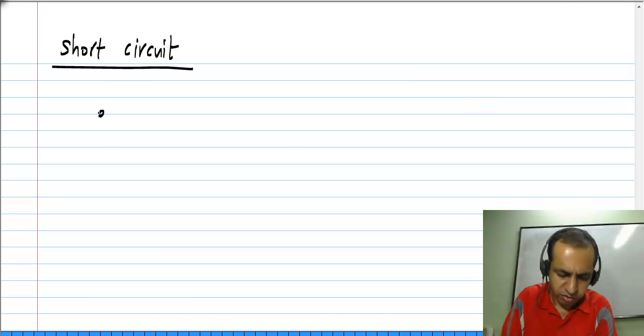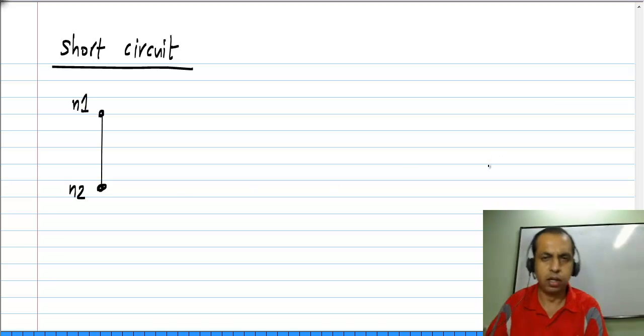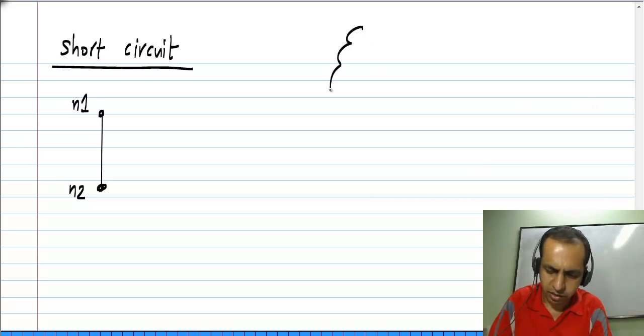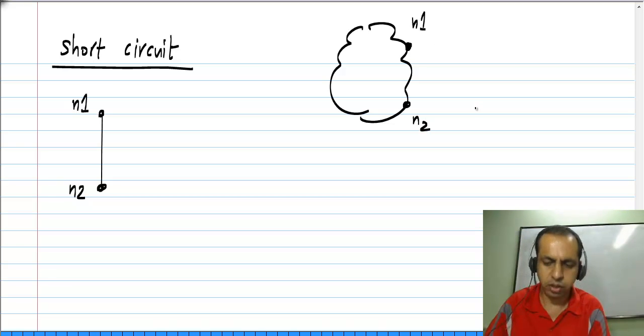When I say short circuit, I have to say that it is a short circuit between these two nodes N1 and N2. There are many ways to consider this. Let us say I have a node N1 here, and I have a node N2 here, and I say that there is a short circuit between them. We know that a short circuit is nothing but an ideal wire connecting these two.